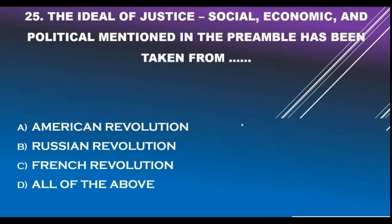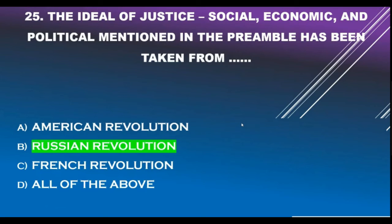Question number 25. The ideal of justice — social, economic and political — mentioned in the Preamble has been taken from: Option A - American Revolution. Option B - Russian Revolution. Option C - French Revolution. Option D - All of the above. Correct answer is Option B: Russian Revolution. The words social justice, economic justice and political justice are taken from the Russian Revolution.